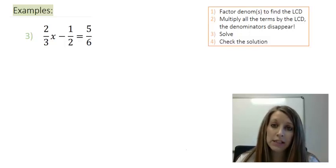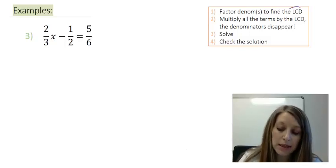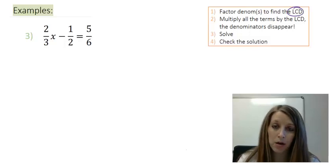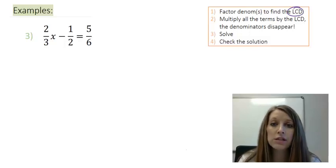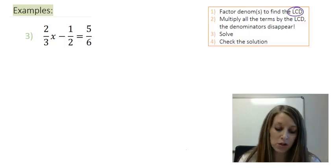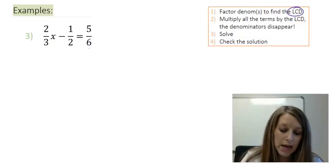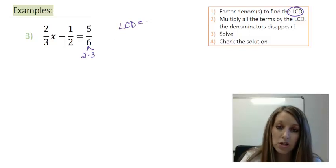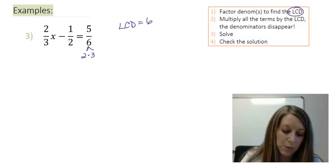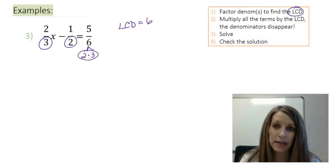Okay, the first thing that I need to do is I need to find my least common denominator between all of my fractions, and that might mean I have to factor these denominators first. This one is pretty easy. I can factor my denominator of six to give me two times three. So I see that my LCD is, in fact, two times three or six, because all of those pieces have those two factors in it.